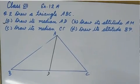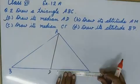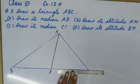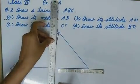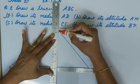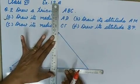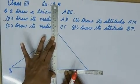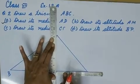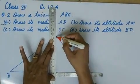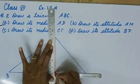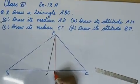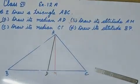B part. Draw its altitude AM. For altitude, we will keep one scale to the baseline and balance the other scale as a perpendicular joining A to BC. Hence, AM is the altitude.